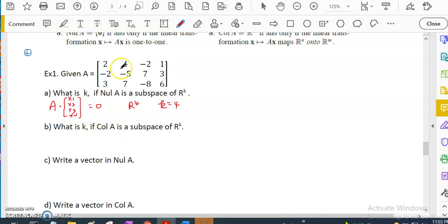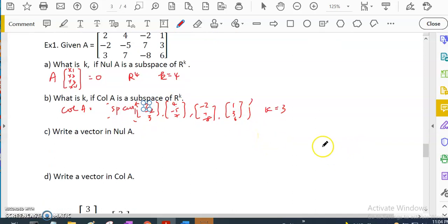What about column A? Column A is using the set of linear combinations. So column A is actually the span of [2, -2, 3], [4, -5, 7], [-2, 7, -1], [1, 3, 6] - all different linear combinations of these four vectors. It's a space because it's a spanning set, so K equals 3 because each one has 3 entries vertically, a column vector of 3 entries.